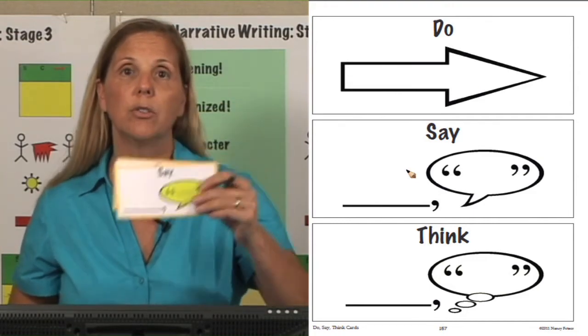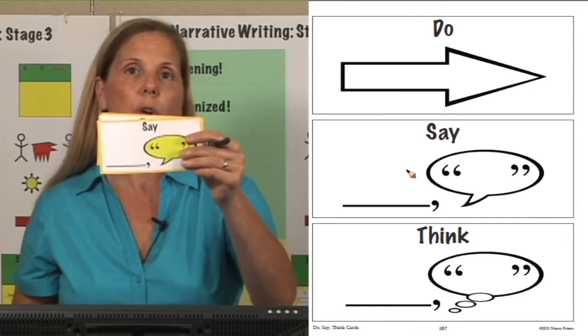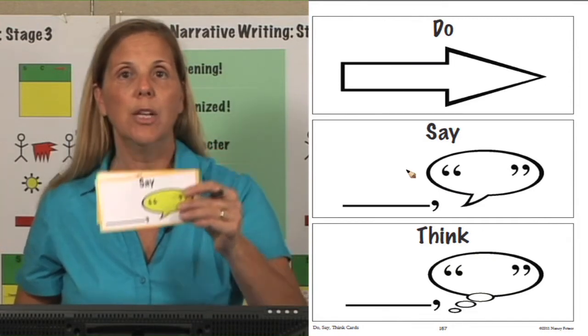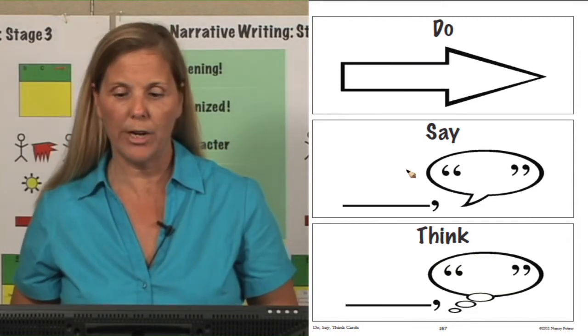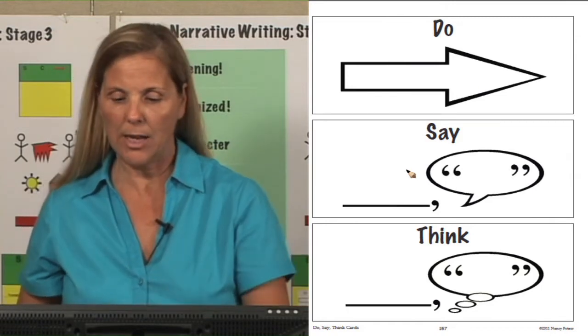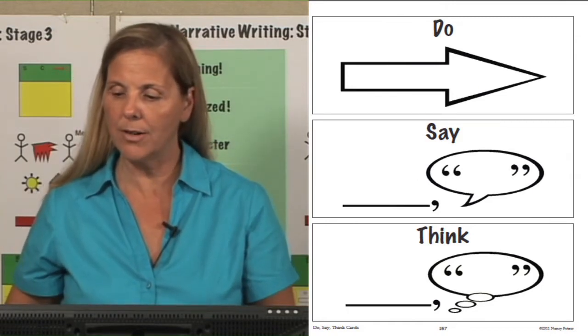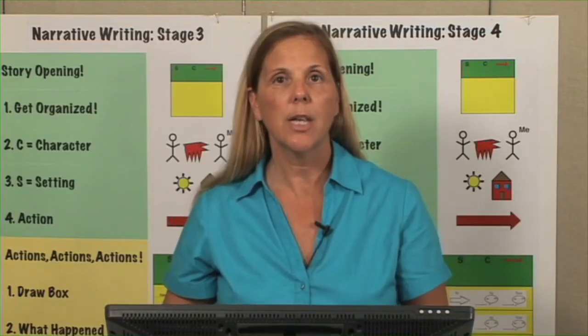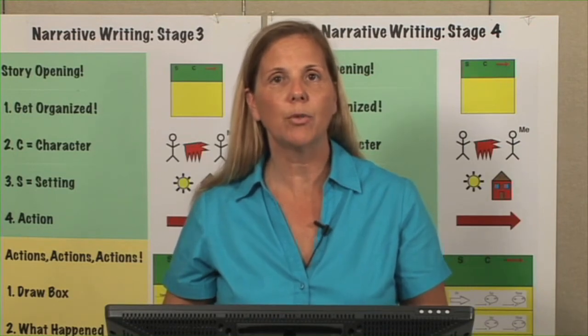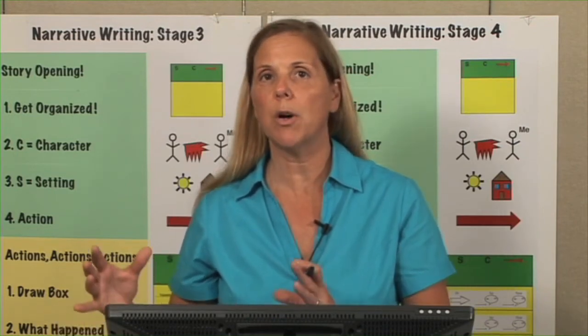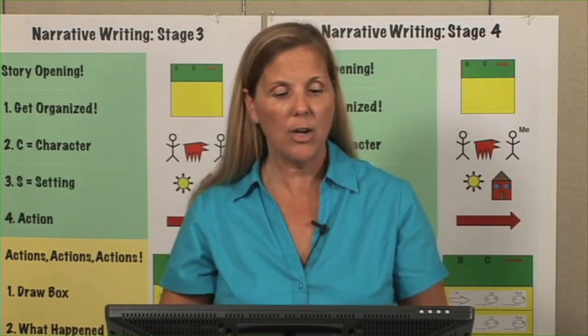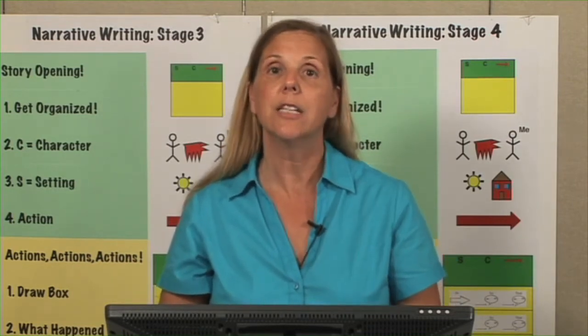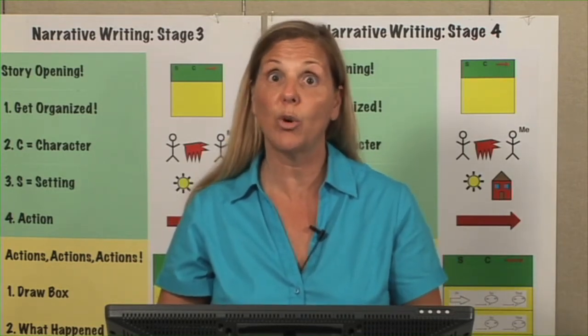Then we're going to draw our picture, or draw the dialogue or thinking bubble, depending on what it is we're doing in our story. These are your black line masters to make do, say, think cards. On the next page are the emotion cards. This is just a deck of emotion cards. Students who are working in small groups or independently could pick an emotion card to help them plan the next part of their story if they're stuck.